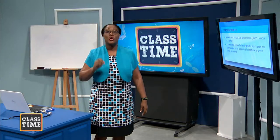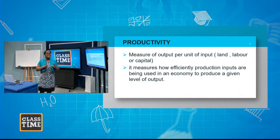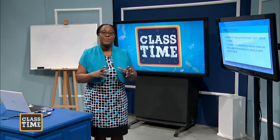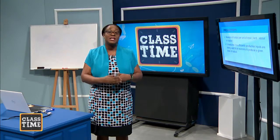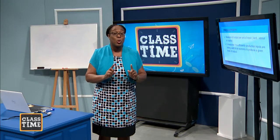Now let's look at productivity. Productivity is about how efficiently we are using inputs to produce a good or service. By definition, it is a measure of output per unit of input. It measures how efficiently the factors of production are being used in the economy to produce a given level of output. If you have land, workers, and capital, and they are being efficiently utilized, they produce a given level of output — that is productivity.